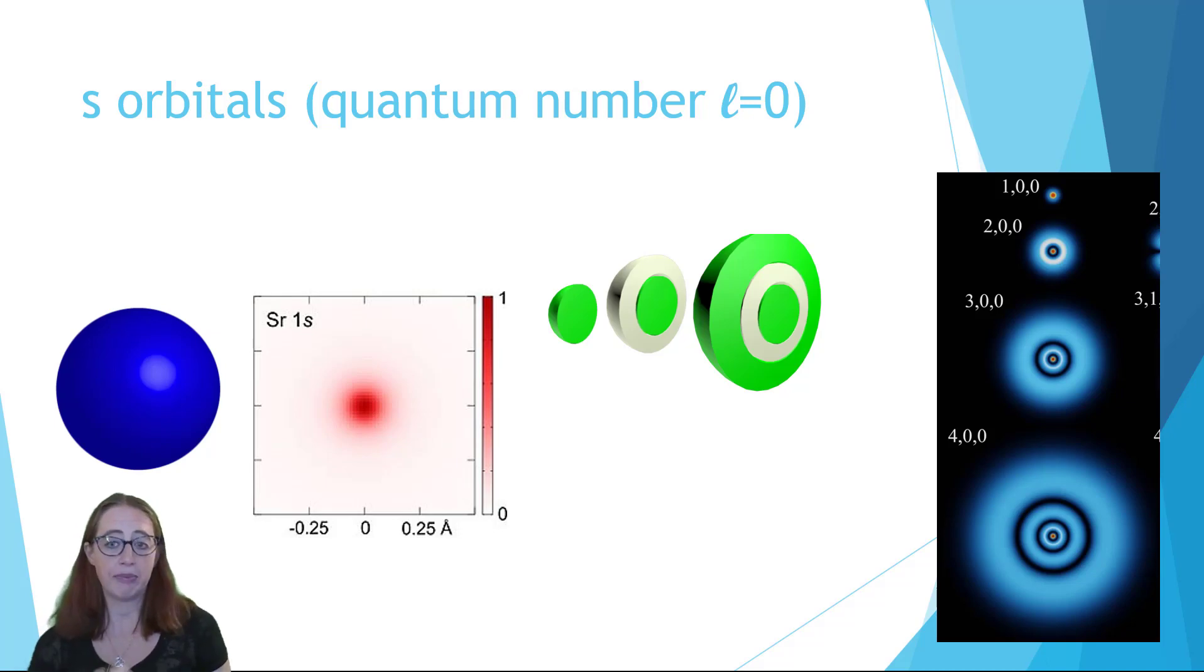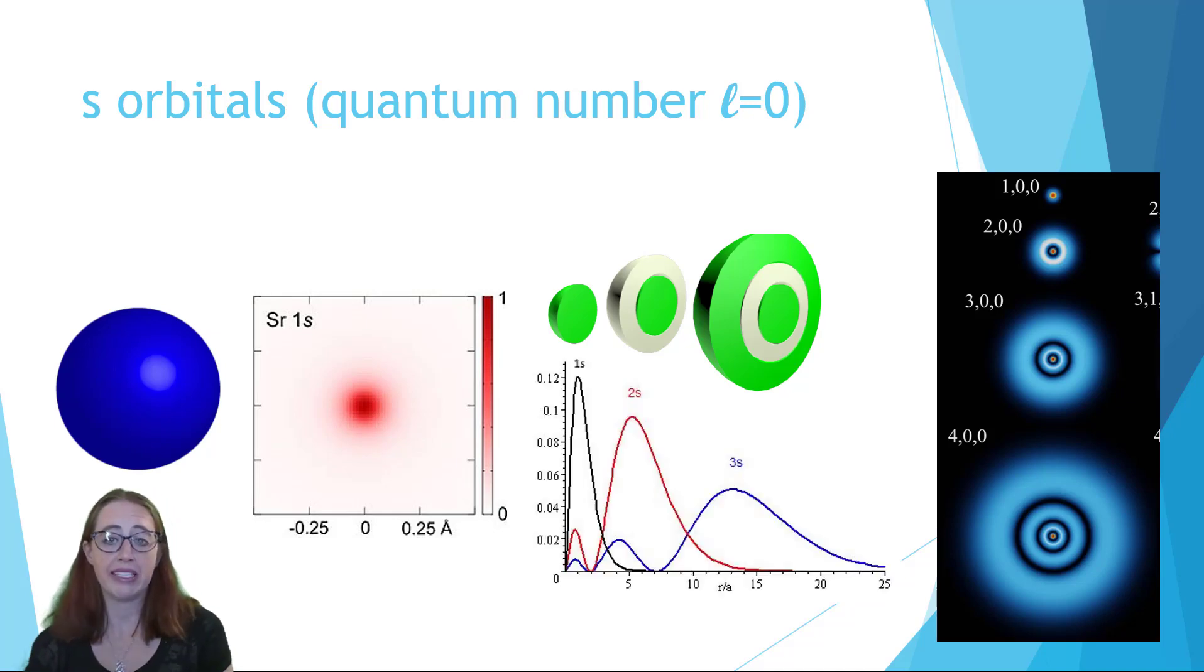In between each ring, the probability density goes to zero, and that's called a node. So when the probability density goes to zero, it's a node, just like when we were talking about particle in a box. You may also see graphs of probability density used to visualize the orbitals, as shown here. This gives a bit more detail to the way that the probability density changes throughout the ring structure. The picture with the blue concentric rings is attempting to do that through color.